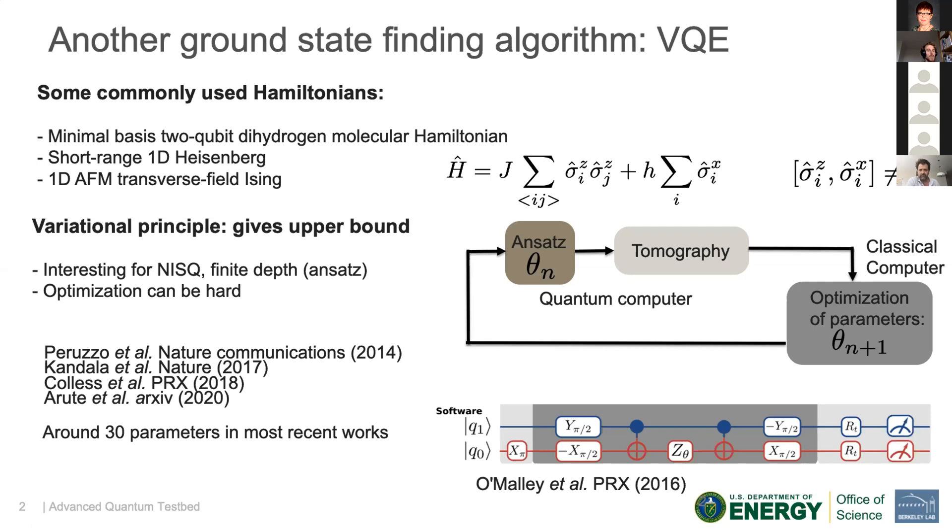But there are some problems with the VQE. One being that you need an ansatz and you need that the ansatz can allow you to kind of move into Hilbert space so that you can really find at least overlap totally with the ground state by changing the parameters. There is also the optimization part, which in recent work has 30 or even more parameters, so there is also some complications here.